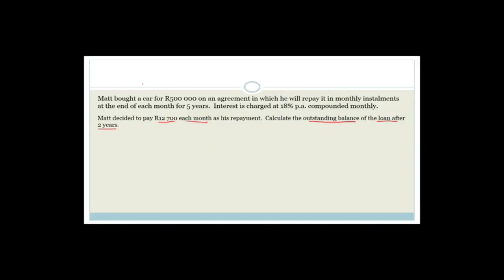The outstanding balance is basically what you get if you take your 500,000 and compound it for two years, then subtract the future value of the payments you've been making. So it's your compounded interest formula minus the future value of what you are paying. Let's set this up: the balance equals the compound interest formula first.